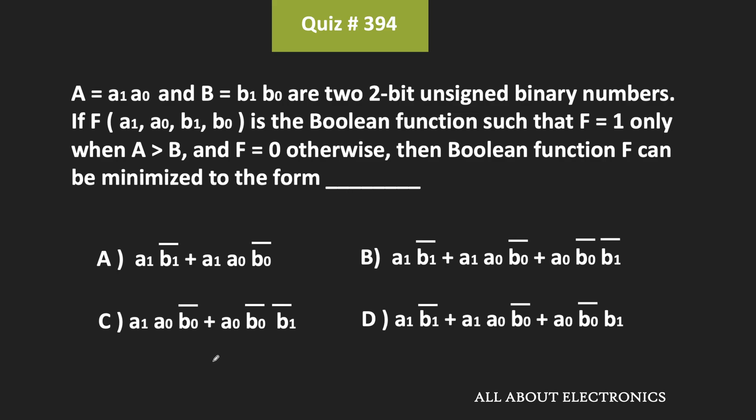Hey friends, welcome to the YouTube channel All About Electronics. In this question, we have been given the Boolean function which consists of four variables: a1, a0, b1, and b0. These four variables represent two unsigned binary numbers, and the output of the Boolean function f is equal to 1 when the number a is greater than b; otherwise, the output f is equal to 0.